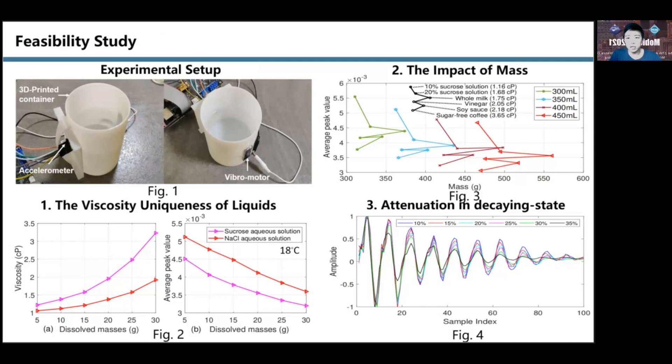From experiments, we discovered that glucose solution and sodium chloride solution were suitable at 80 degrees Celsius. We can see in figure two that the same mass will get different peaks. Figure three shows that the influence of volume is far more significant than mass.